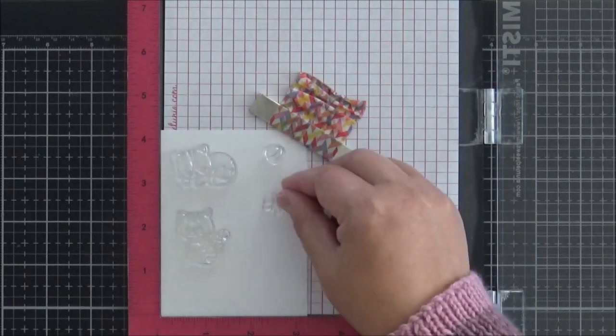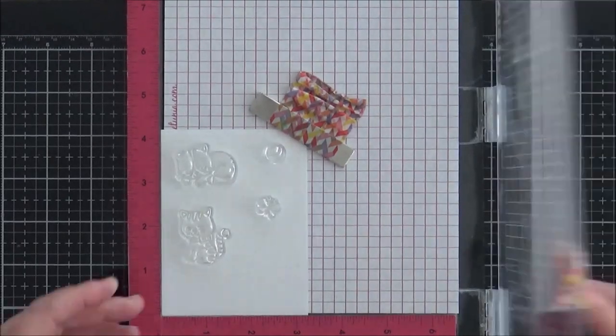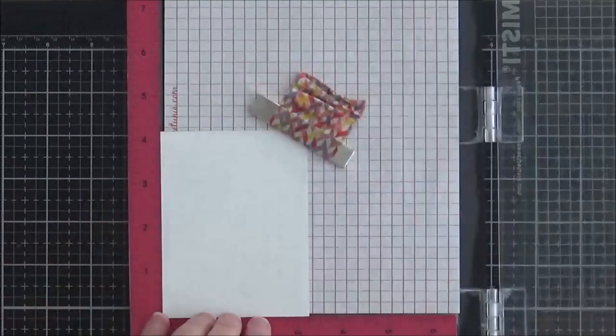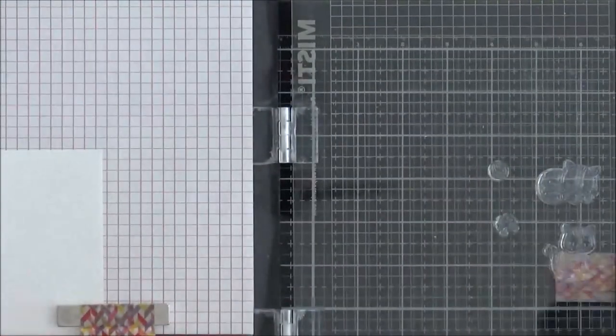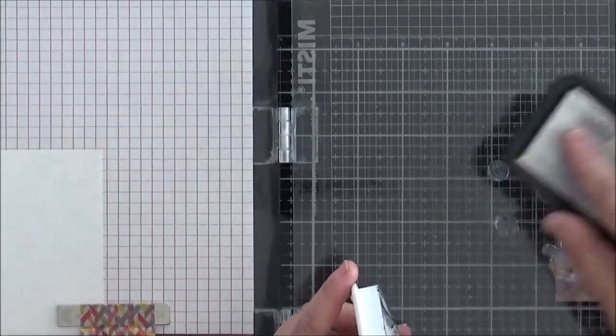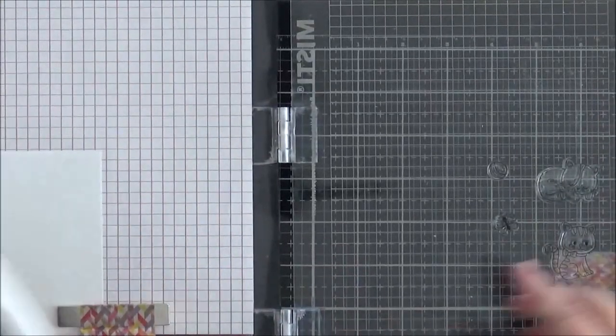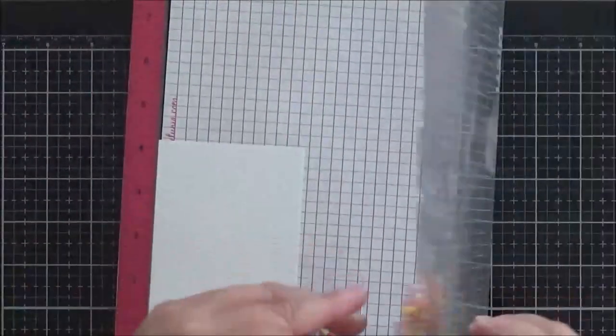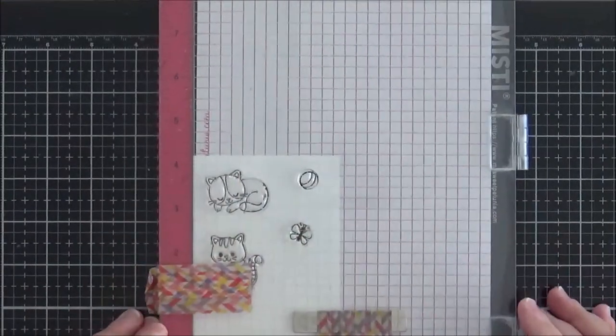We're going to start off by taking all of the images that we're going to use on the card today. That's two cats, a ball and a butterfly. I've just popped them into the Misti and I'm going to stamp them with Memento Tuxedo Black Ink twice to make sure that I get good coverage. I'm using Neenah Solar White 80 pound cardstock.